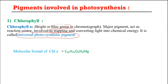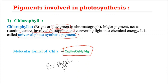Now if we talk about the molecular formula of chlorophyll A, it is C55, H72, O5, N4, Mg. The structure of chlorophyll A molecule is made up of two parts: one is known as the porphyrin head, and the second part is the phytol tail. These two parts together make the chlorophyll structure.